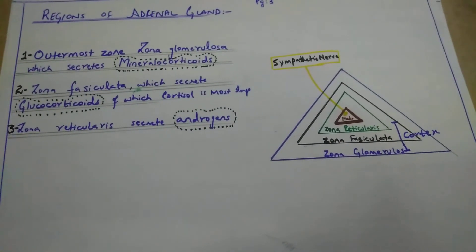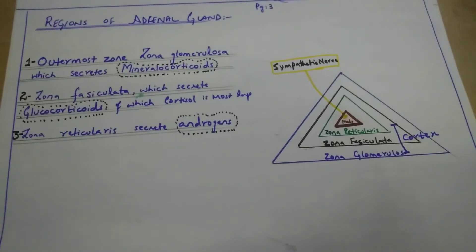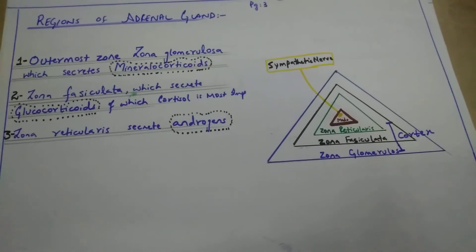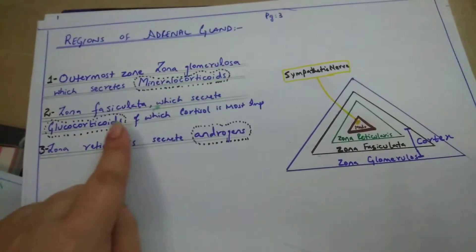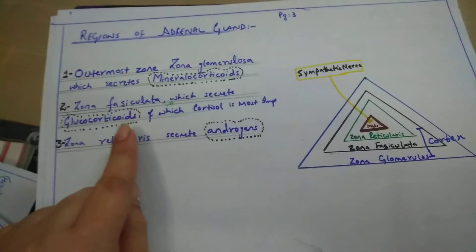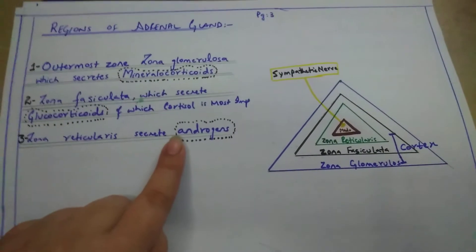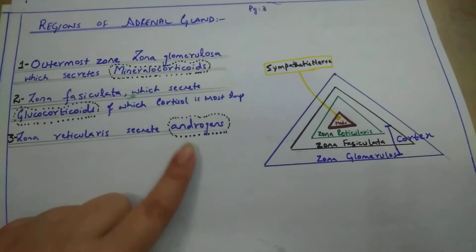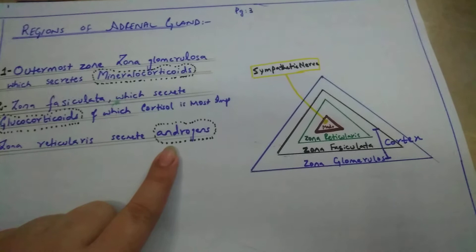The adrenal cortex secretes different types of hormones: mineralocorticoids, glucocorticoids, and androgens. Mineralocorticoids and glucocorticoids maintain the mineral content and glucose content in the body, while androgens are concerned with sexual characteristics.